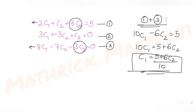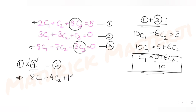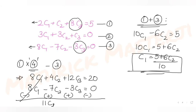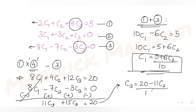To express c3 in terms of c2, multiply equation (1) by 4 to get 8c1 + 4c2 + 12c3 = 20, then subtract equation (3): 8c1 − 7c2 − 3c3 = 0. The c1 terms cancel, giving 11c2 + 15c3 = 20, so c3 = (20 − 11c2) / 15.